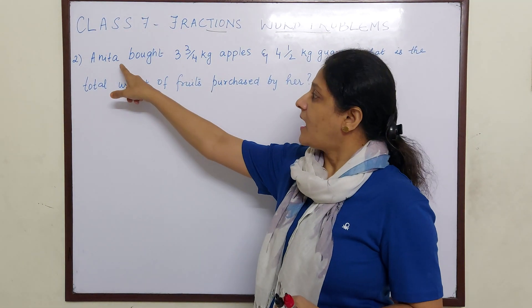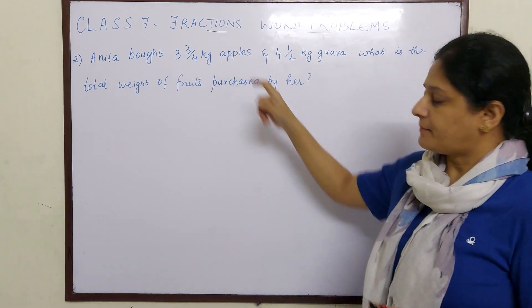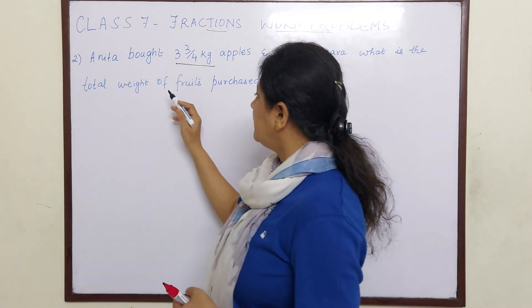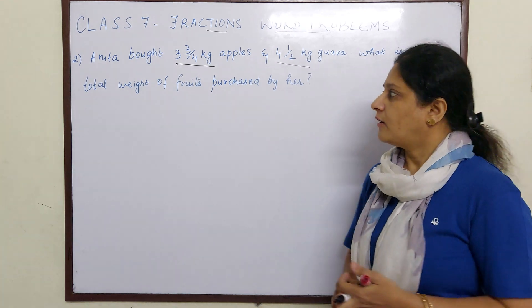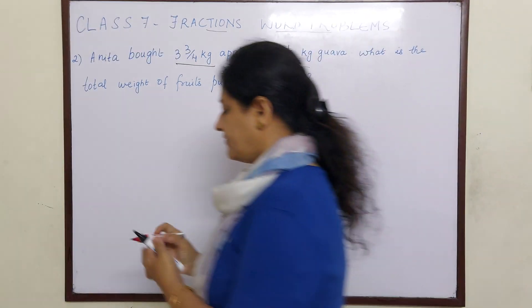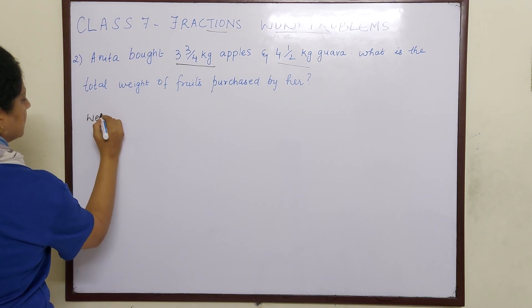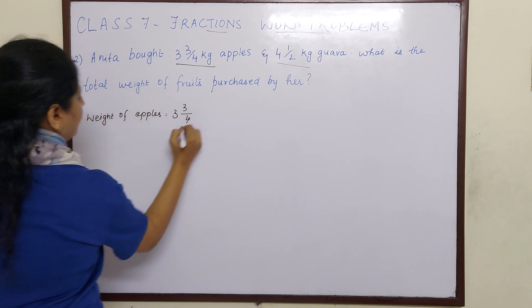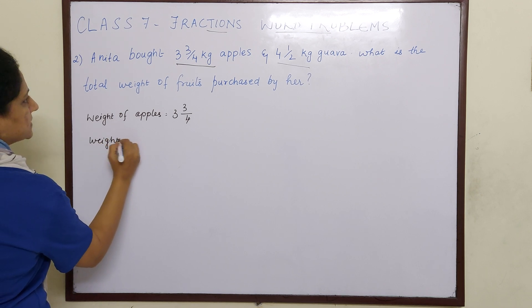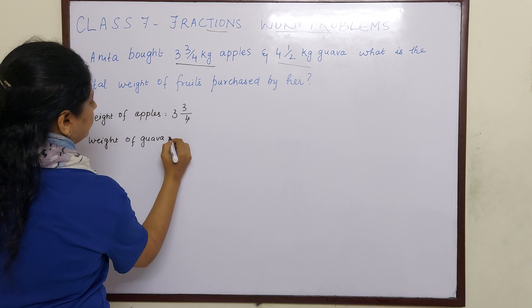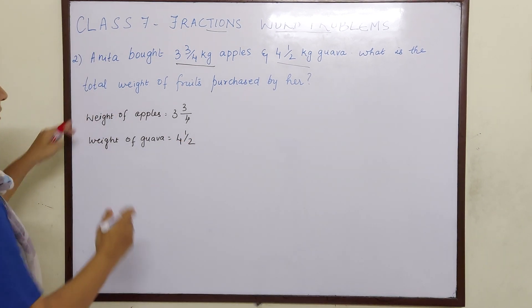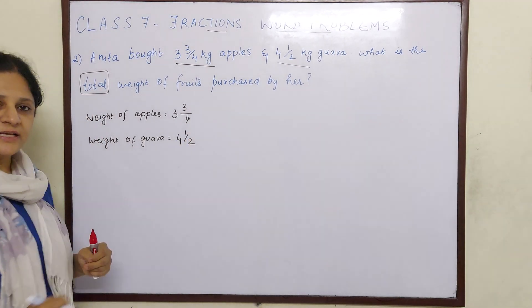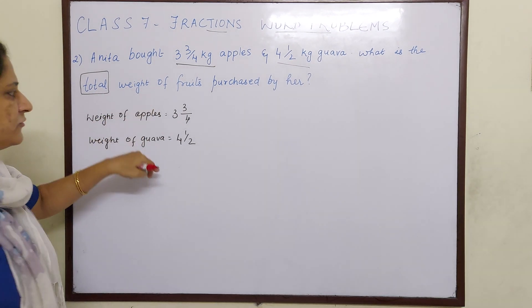Now our next question is: Anita bought 3 3/4 kg apples and 4 1/2 kg guava. What is the total weight of fruits purchased by her? Here they have given the weight of apples. So we will write first weight of apples, it is 3 3/4 kg. Next is weight of guava, it is 4 1/2 kg. Now they are asking what is the total weight? Total means children you have to do addition.